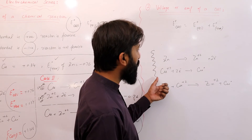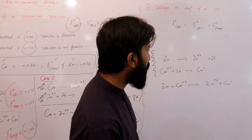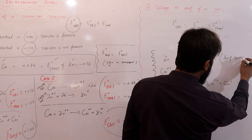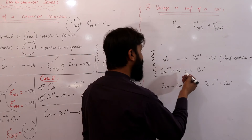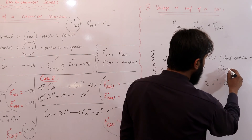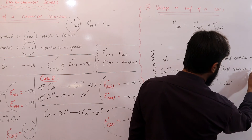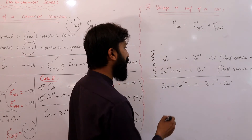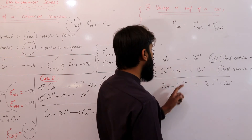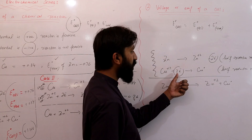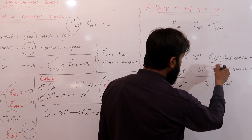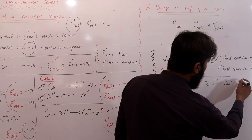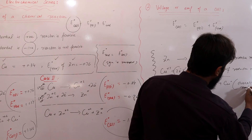Zinc और copper electrodes के galvanic cell में: zinc electrons lose कर रहा है — यह half oxidation reaction है। Copper zinc से आने वाले electrons gain कर रहा है — यह half reduction reaction है। Overall reaction के लिए इन दो half reactions को sum up करते हैं। Half oxidation reaction के product में Zn²⁺ और half reduction reaction के reactant में Zn²⁺ cancel हो जाते हैं। बाकी बचता है: Zn + Cu²⁺ → Zn²⁺ + Cu — यह overall reaction है।